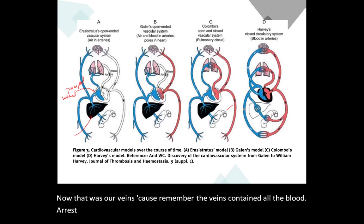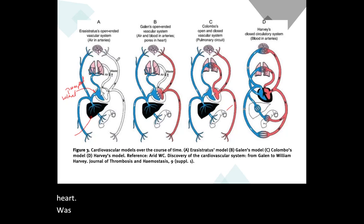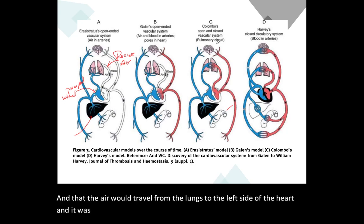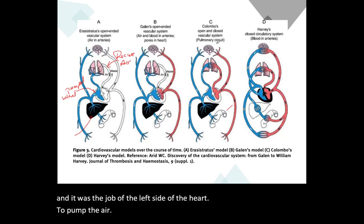Erasistratus then proposed that the function of the left side of the heart was to receive air from the lungs, and that the left side would pump the air — the oxygen — throughout the body.